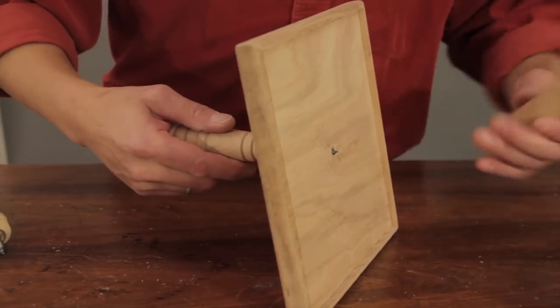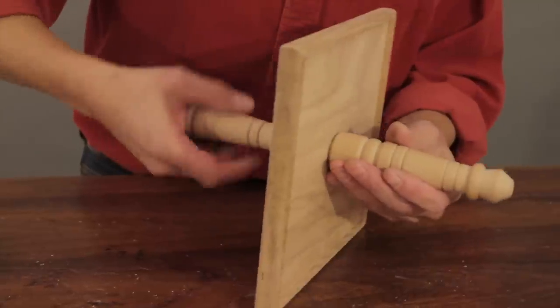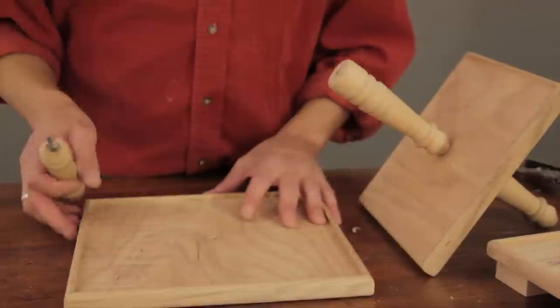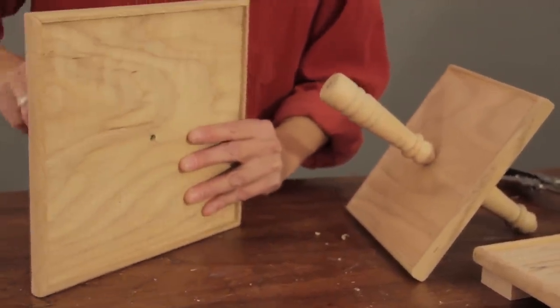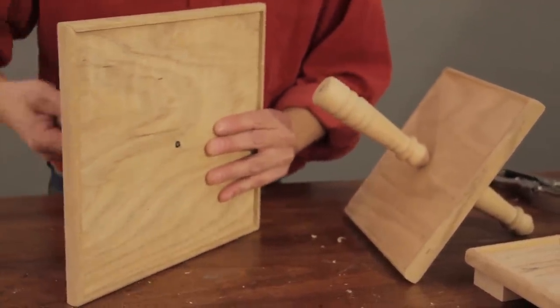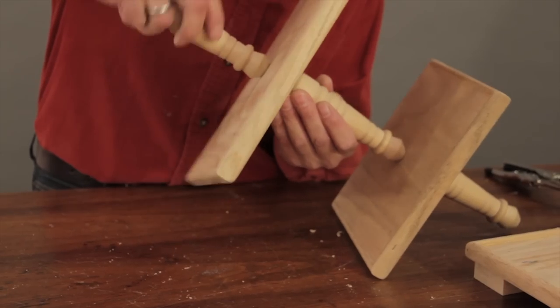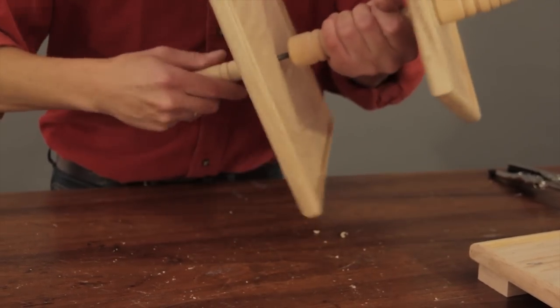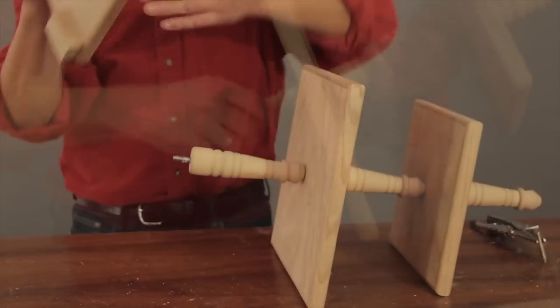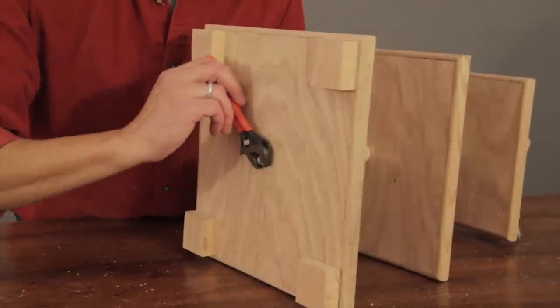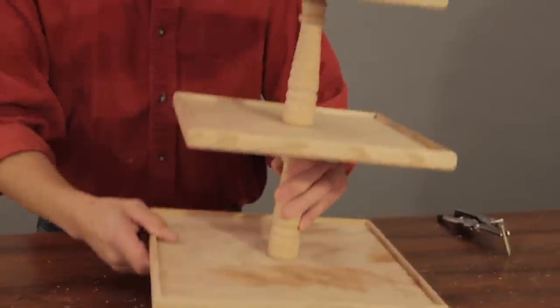Now it's time to assemble the server. Slip the dowel screw of the middle post through the top tray, threading it through the opening of the top post. Next, slip the dowel screw of the bottom post through the middle tray, threading it through the opening of the middle post. Slip the base onto the bolt of the bottom post and fasten it with a nut and washer on its underside.